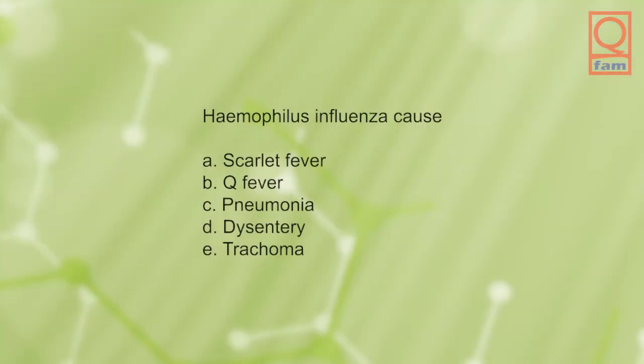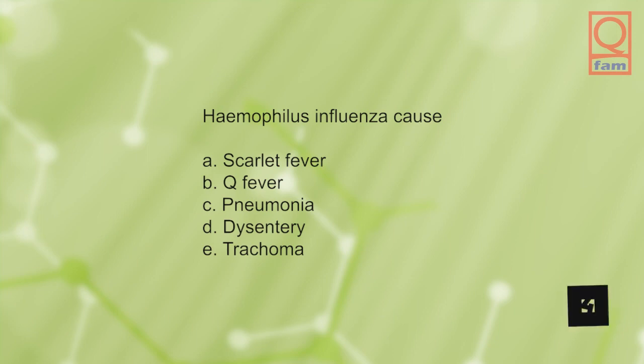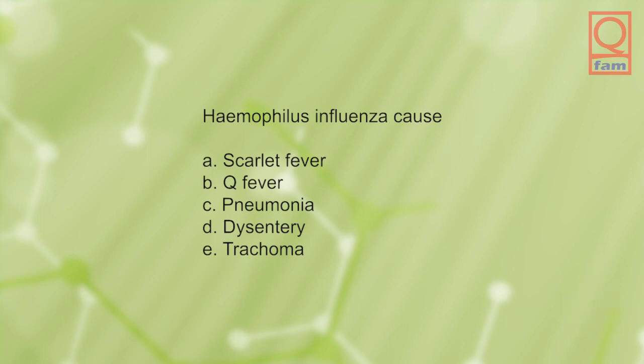Haemophilus influenzae causes: A) scarlet fever, B) Q fever, C) pneumonia, D) dysentery, E) trachoma. The answer is C, pneumonia.